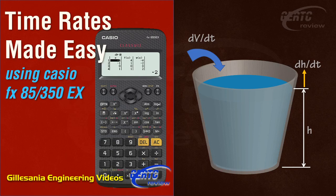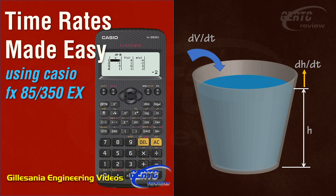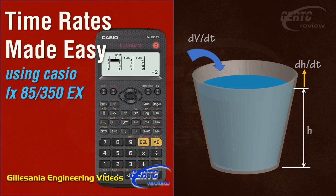Time rates made easy using Casio Calculator. Hi, hello. Welcome back again to our YouTube channel, Gilisanya Engineering Videos. This time, I will present to you time rates calculus. As the title says, it will be made easy using calculator. But before I do it with calculator, we will solve it first with the usual — traditional calculation using derivatives. We will be using the 350EX, but you can also use the 570 or the 991. They have different menus, but the same functions.